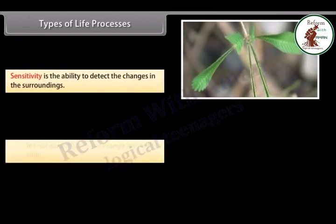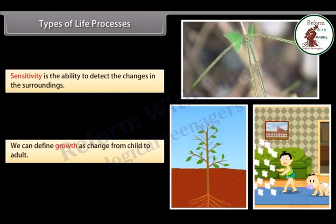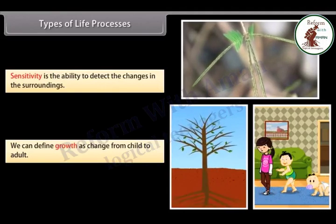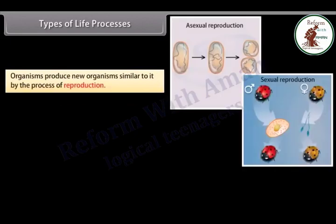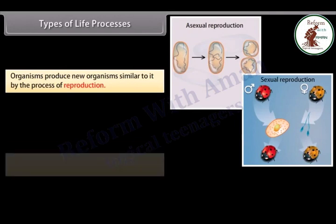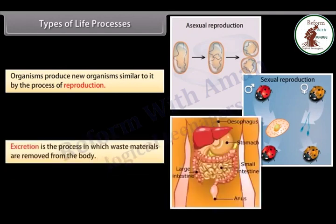We can define growth as the change from child to adult. Organisms produce new organisms similar to themselves by the process of reproduction. Excretion is the process in which waste materials are removed from the body.